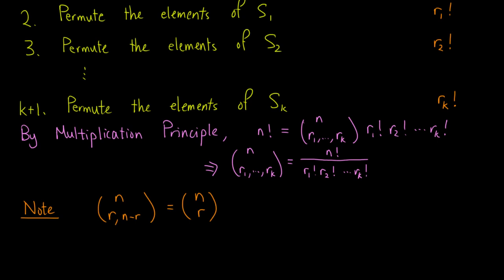We also observe that the number of partitions into two subsets — one with size R and the other with size N minus R — equals the binomial coefficient N choose R.